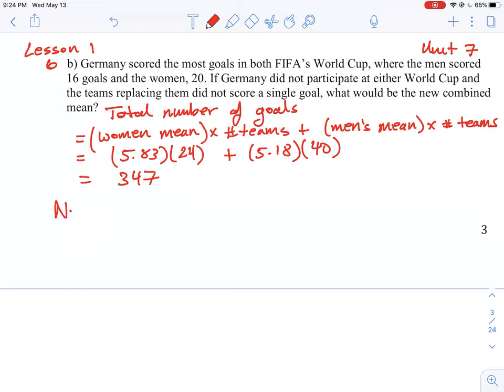So what we need to look at here is the new mean, which would take place if we take out Germany's participation, where they contributed a total of 16 goals from the men and 20 from the women. So we know the old total is 347. So we have to take out the 16 and the 20.